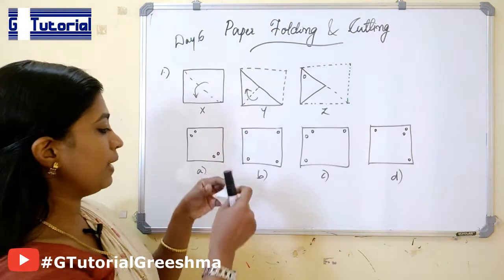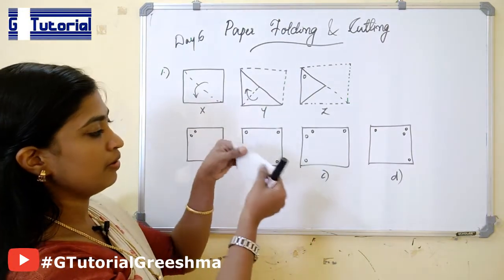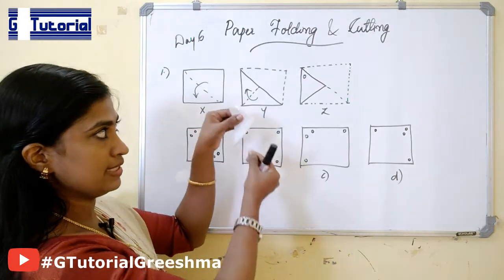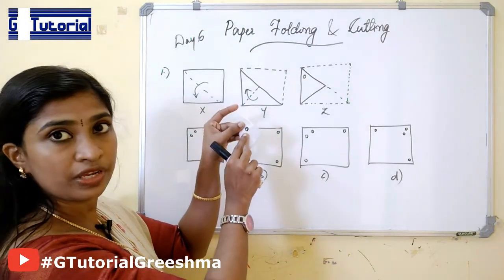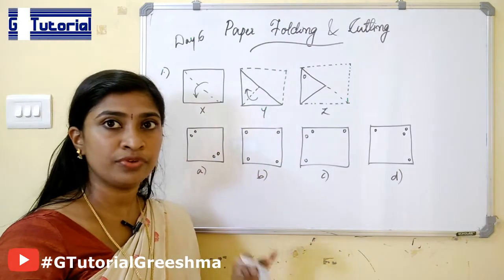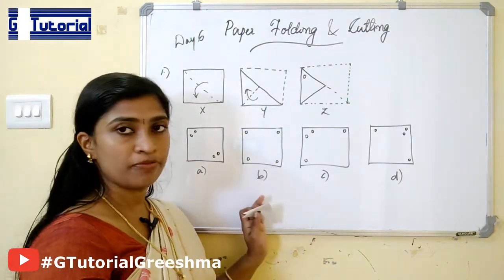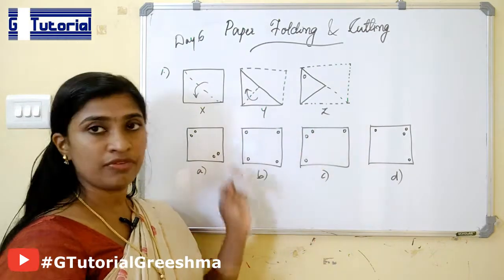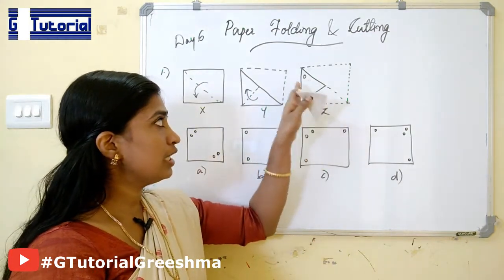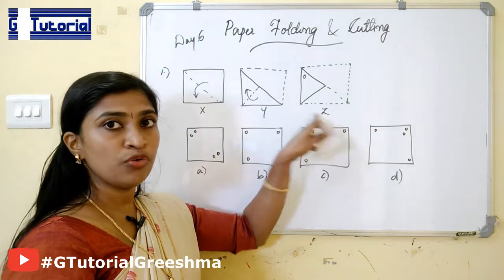We are given a paper like this. First we are folding like this, then folding like this, and then making a cut over here. To solve this type of problem, you have to follow the reverse manner. After making the cut, consider moving from the last figure back to the first figure.